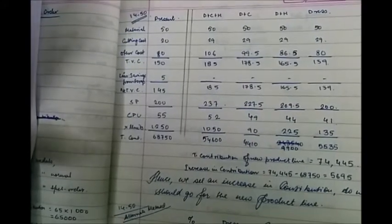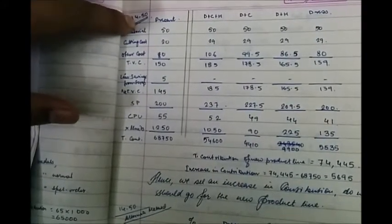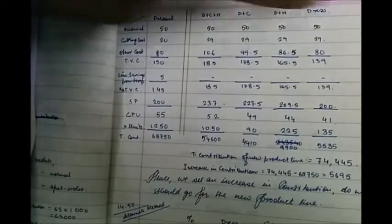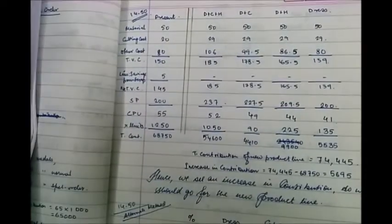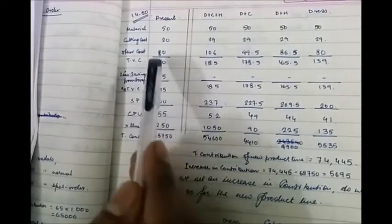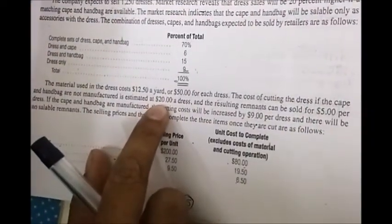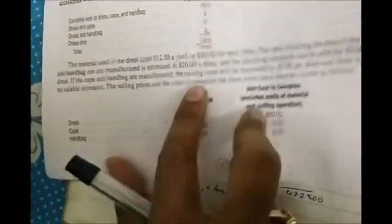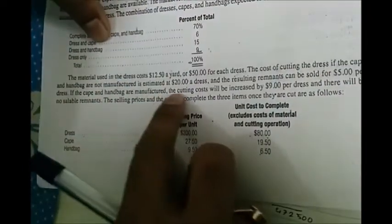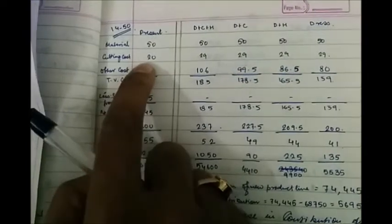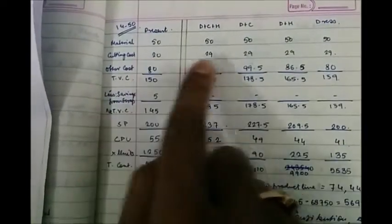Coming to the material part: as described in the problem, material is at $50. I have written $50 at every point — whatever the combination, material cost is always $50. Cutting cost comes at $20 for the present product line. For the new variants, since the cape and handbag are manufactured, the cutting cost increases by $9, summing up to $29 for each new variant.